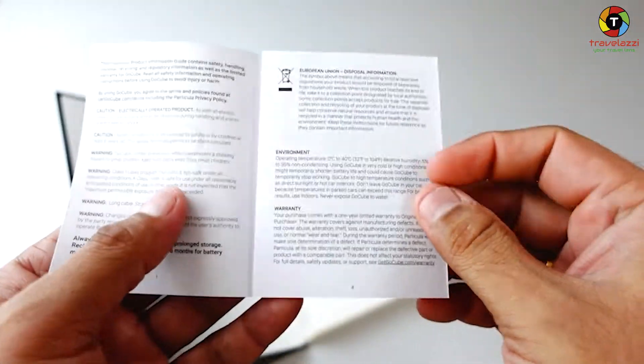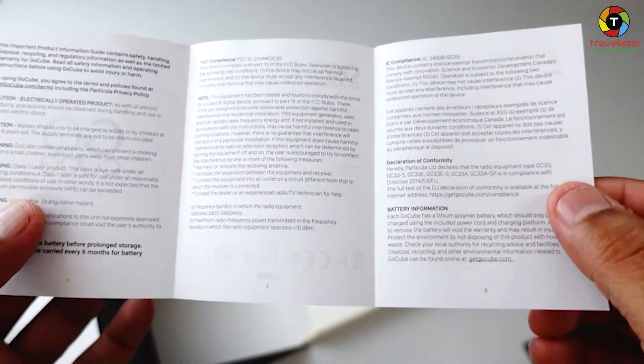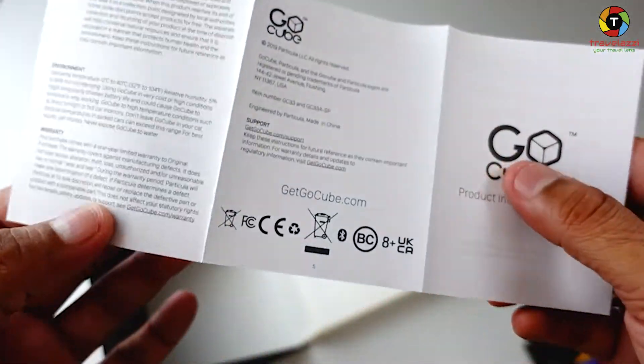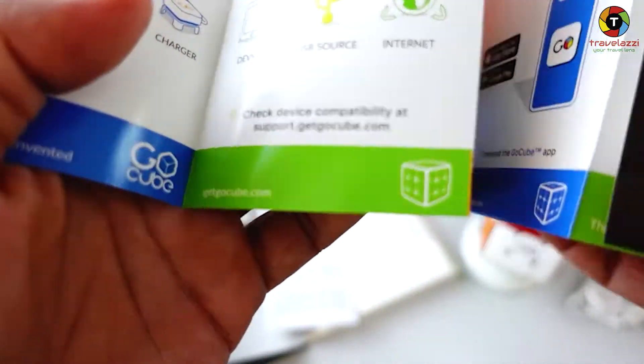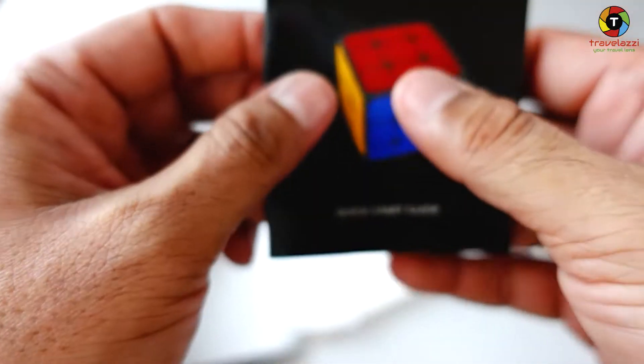That's your product information, all the specifications, some safety guidelines. That's the quick start guide. There's some nice documentation from the company. Let's start connecting our device with a smartphone.